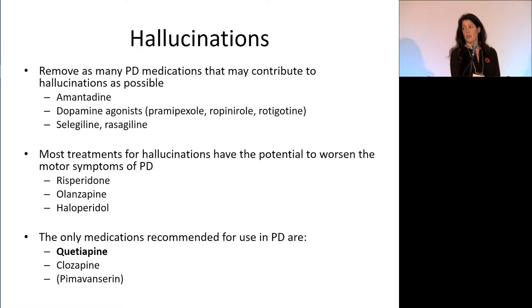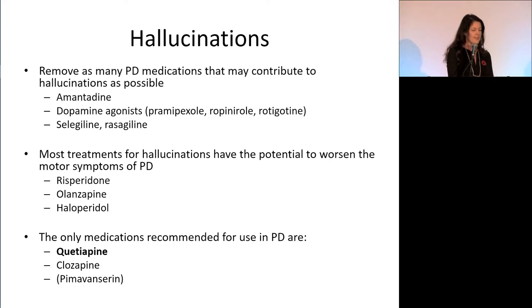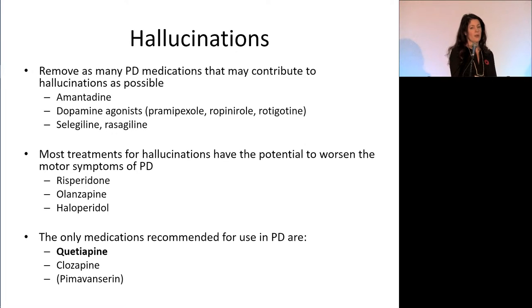Quetiapine is the main option useful for most people with Parkinson's disease. I've mentioned pimavanserin in brackets — you may be aware of this medication. It was just approved in the States by the FDA and is not yet available in Canada. It works differently than all the other medications for hallucinations and may not carry the same potential for side effects. I anxiously await its availability for my patients.